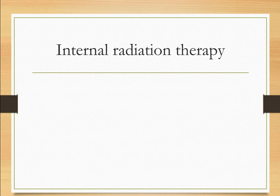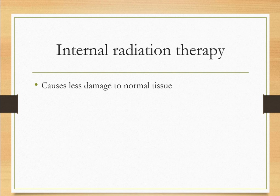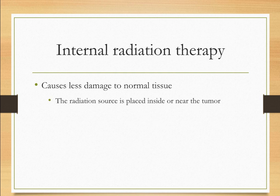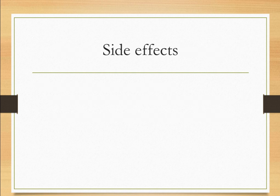Internal radiation therapy, being applied very near the tumor site, is comparably less harmful with fewer side effects. It also allows higher dosages to be used for a short period of time, reducing common side effects. Brachytherapy is used to treat cancers of the head and neck, breast, cervix, prostate, and eye, while systemic therapy is used to treat cancers like thyroid cancer and prostate cancer.